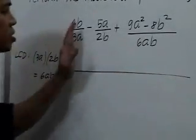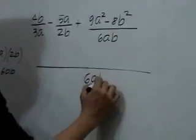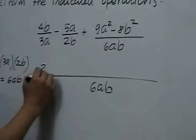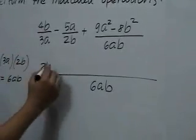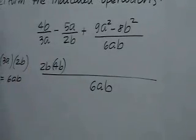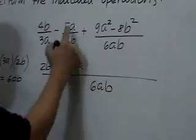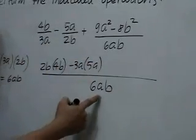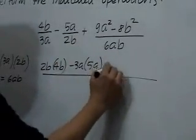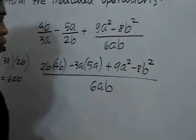So we can combine these three fractions into a single fraction with common denominator 6ab. 6ab divided by 3a is 2b, and that's what we will multiply to 4b. 6ab divided by 2b is 3a, so we have negative 3a times 5a. And 6ab divided by 6ab is 1, so we have positive 1 times these terms, 9a squared minus 8b squared.